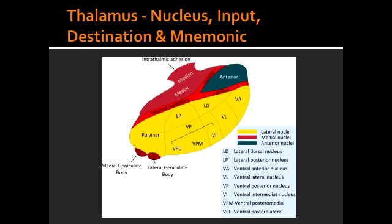The VPL receives information on pain, temperature, pressure, touch, vibration, and proprioception. The end destination of this information is the primary somatosensory cortex.